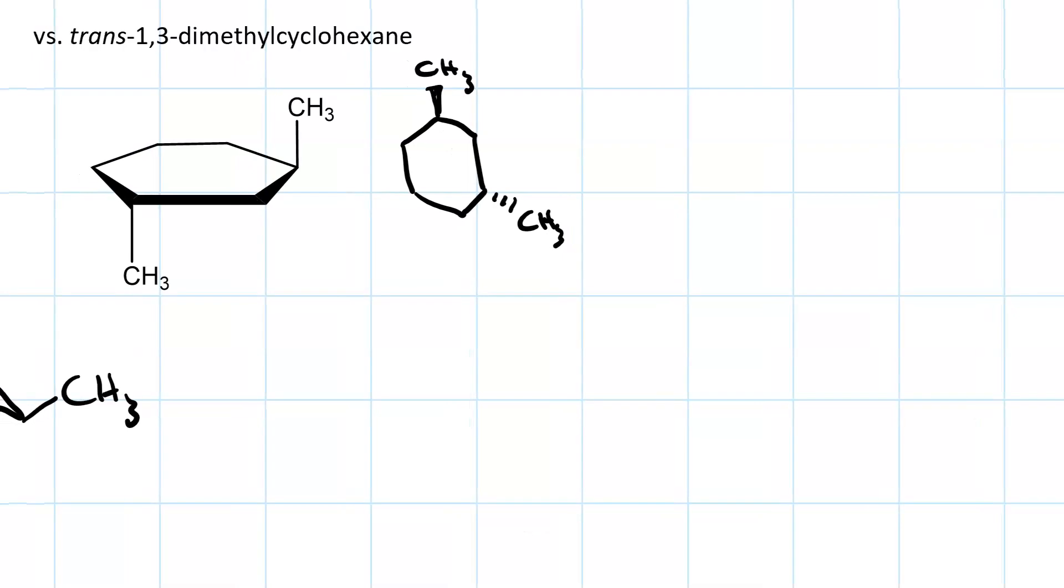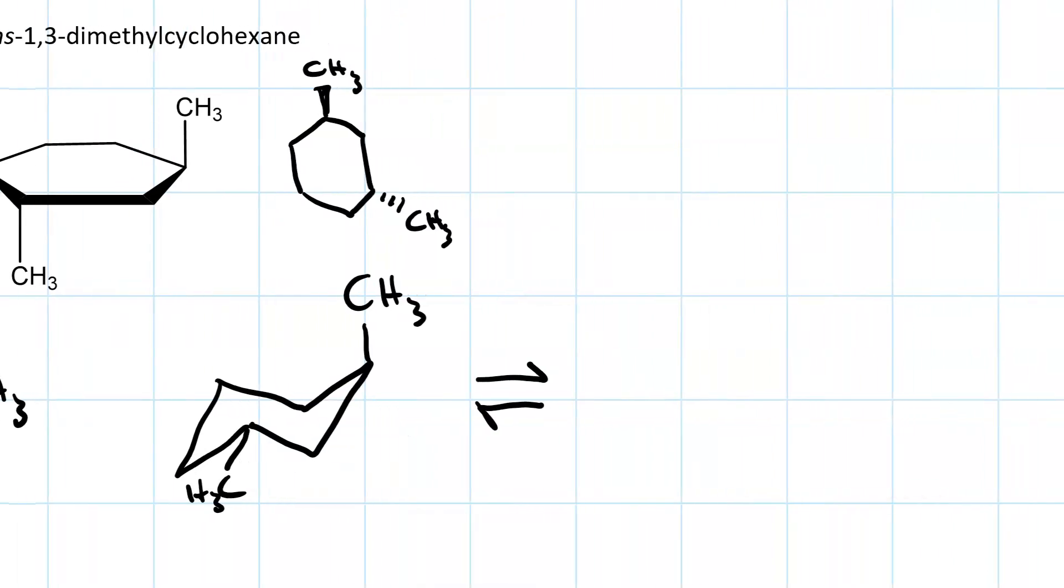And another chair where both of them are equatorial. The trans. We've got axial, equatorial. And equatorial, axial. Those are equally stable. 50-50.